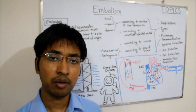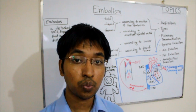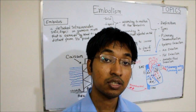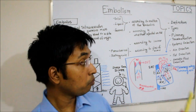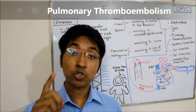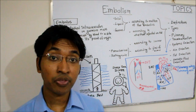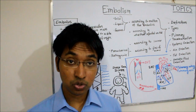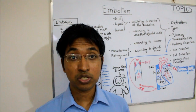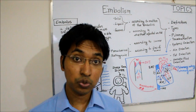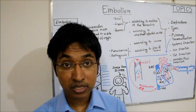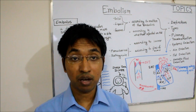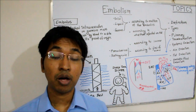The first important embolism we will talk about is pulmonary thromboembolism. Notice the term thromboembolism — that means this embolus originated from a thrombus. In more than 95% of cases, pulmonary embolism arises from deep vein thrombosis of the leg. The commonly affected veins include the popliteal vein, femoral vein, or iliac vein — a thrombus formed inside these deep veins can dislodge and travel through the circulation to the lungs.